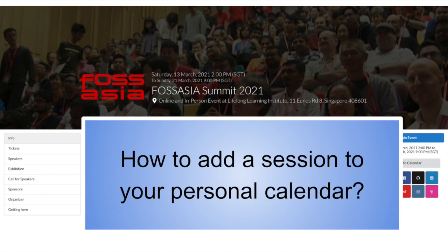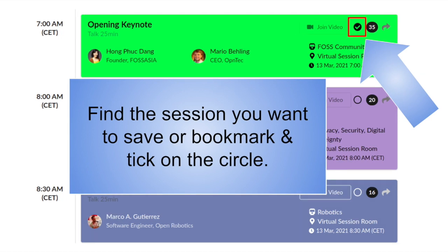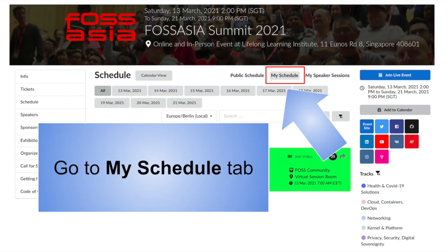How to add a session to your personal calendar. On the event schedule, find the session you want to save or bookmark, and tick on the circle.